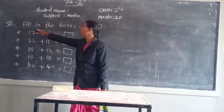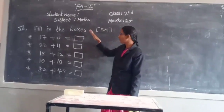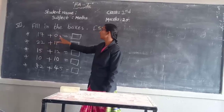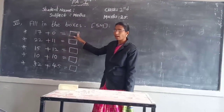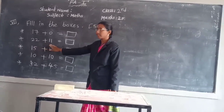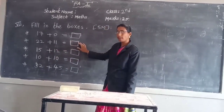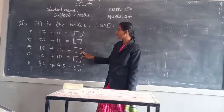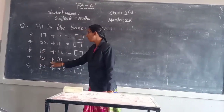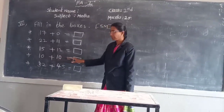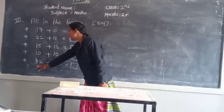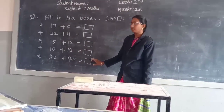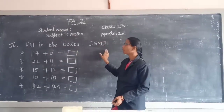Seventh bit: fill in the boxes, write the answers in the boxes. 17 plus 0, write the answer. 22 plus 11, write the answer. 15 plus 15, write the answer. 10 plus 10, write the answer. Next, 32 plus 45, write the answer. 7th bit.